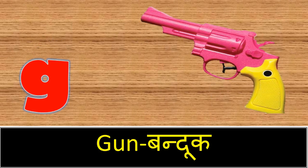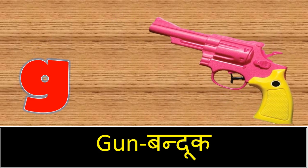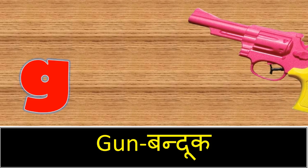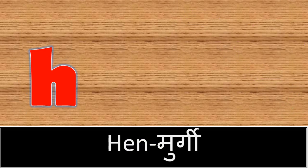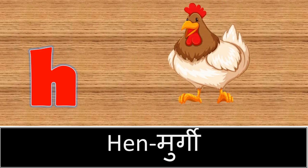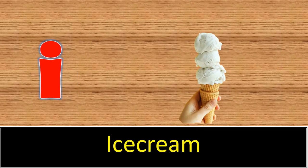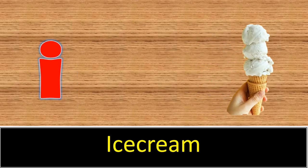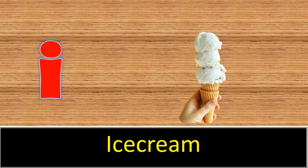G. G for gun. Gun means banduk. H. H for hen. Hen means murgi. I. I for ice cream. Ice cream means ice cream.